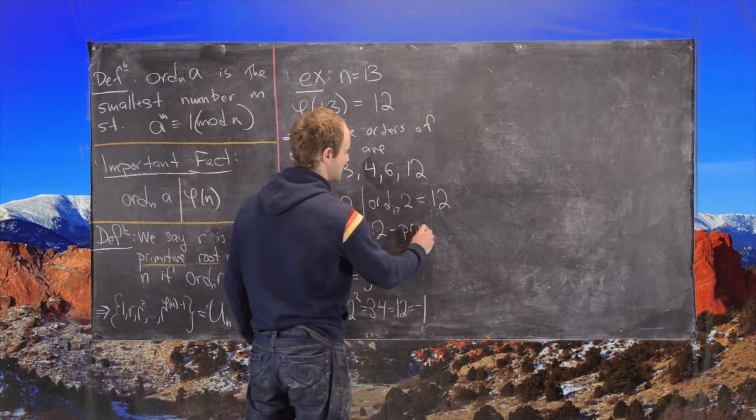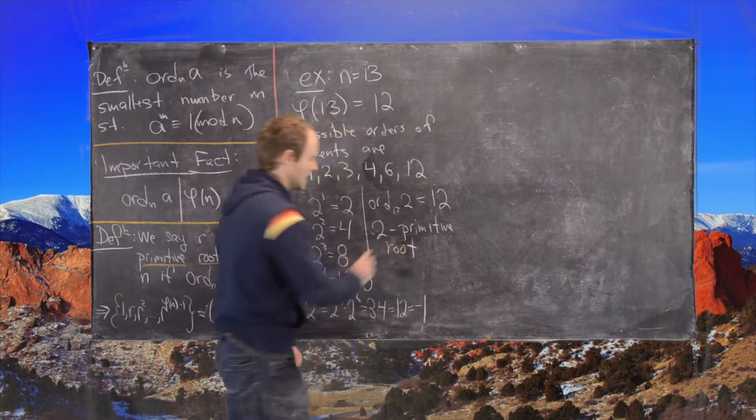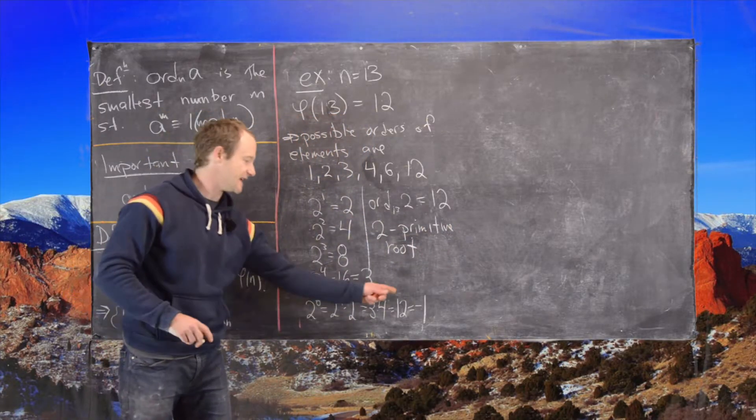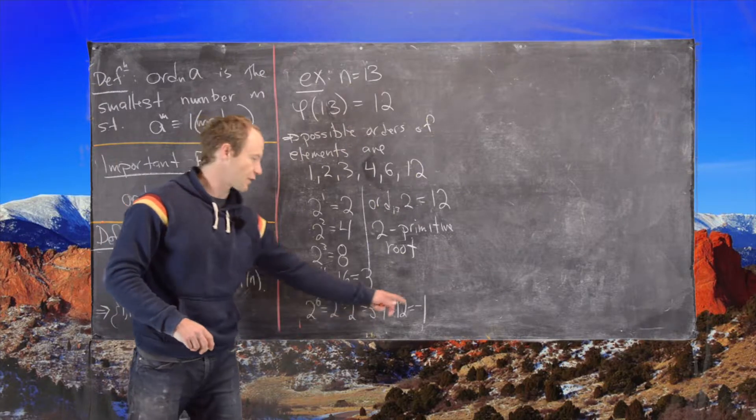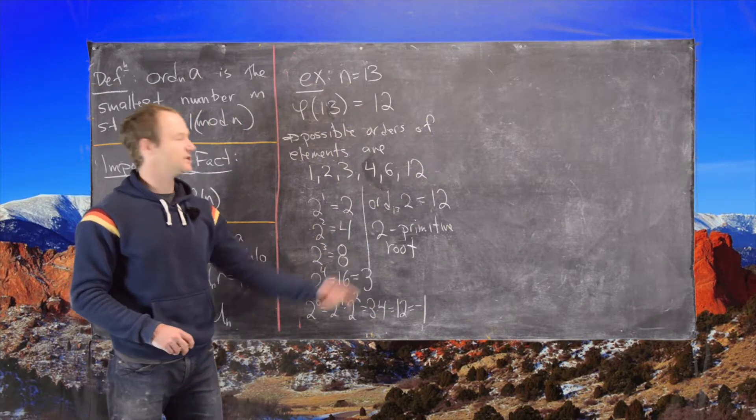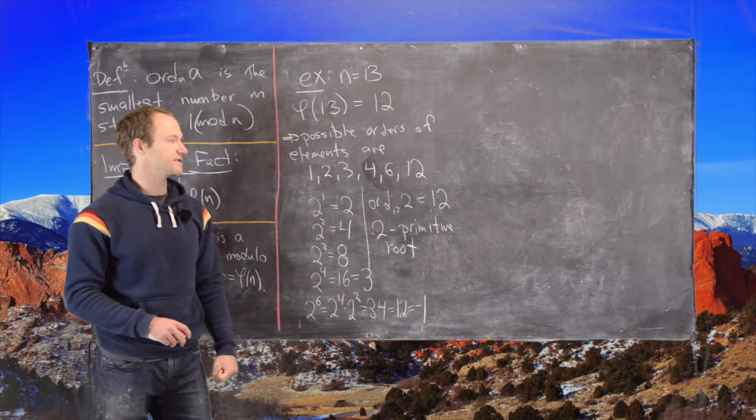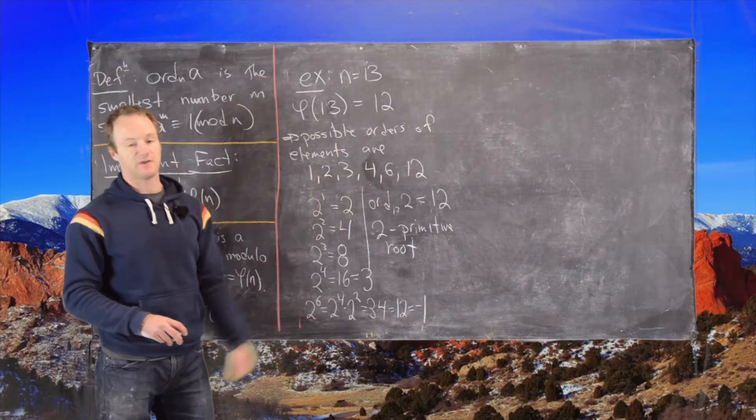In other words, 2 is a primitive root. Now obviously at this point it's easy to check that if you square negative 1 you get 1. But we don't even really need to do that because we know that all that's left as a possibility for the order is 12. In other words, phi of 13.